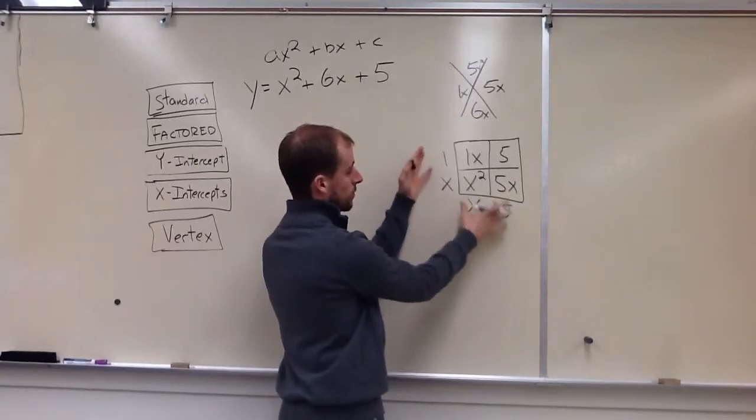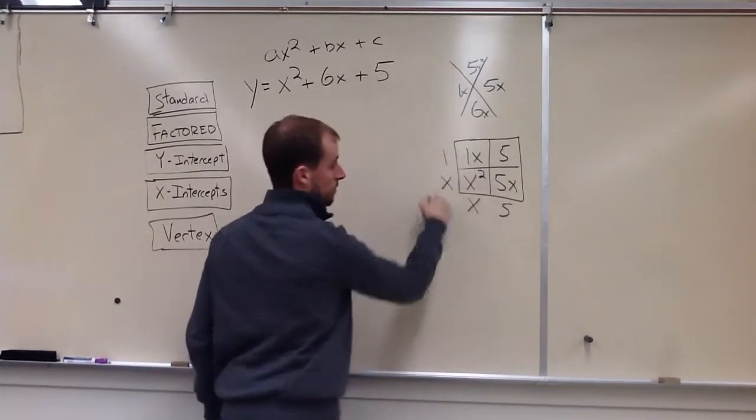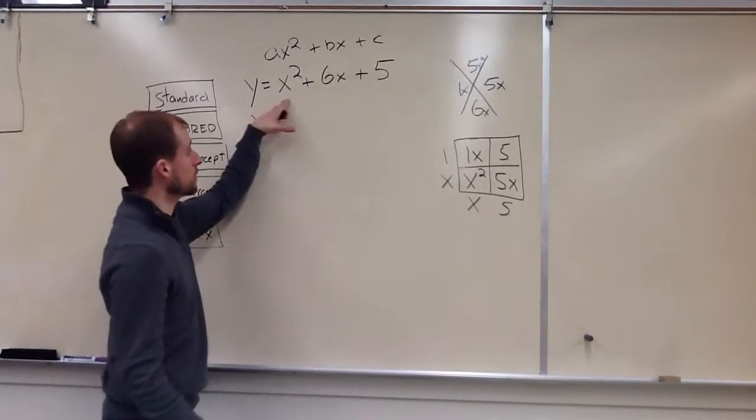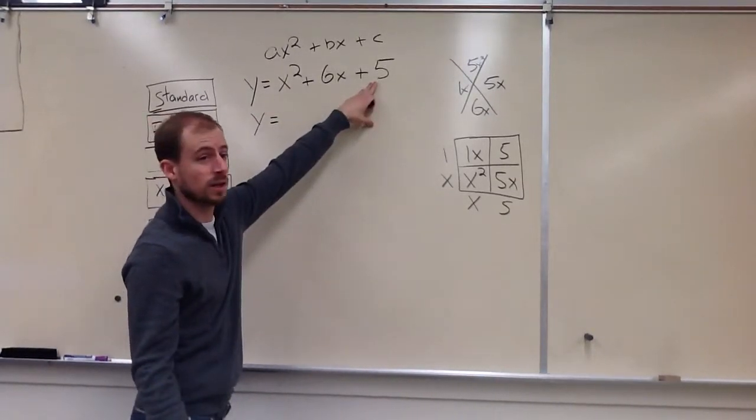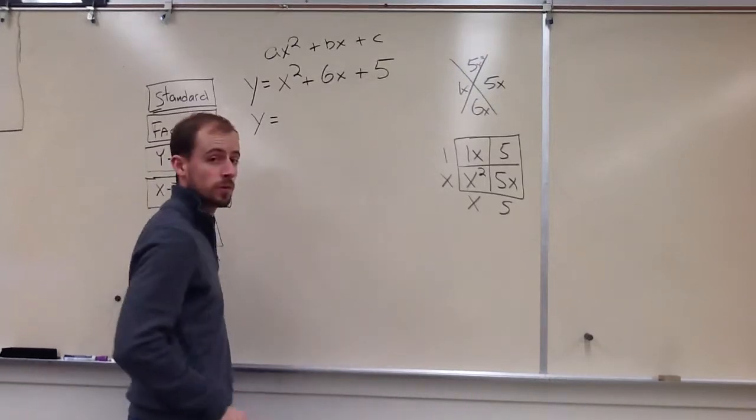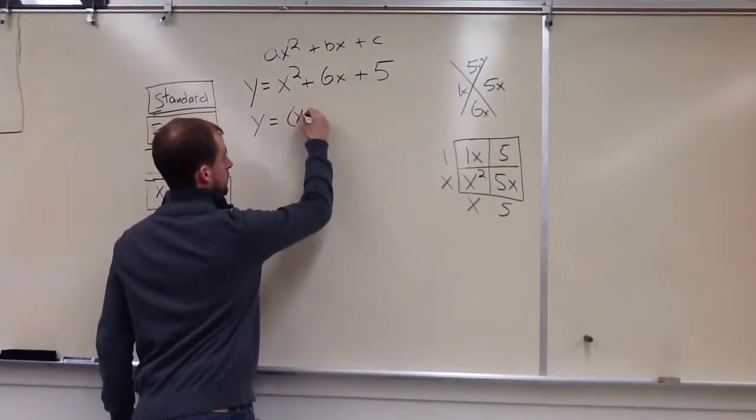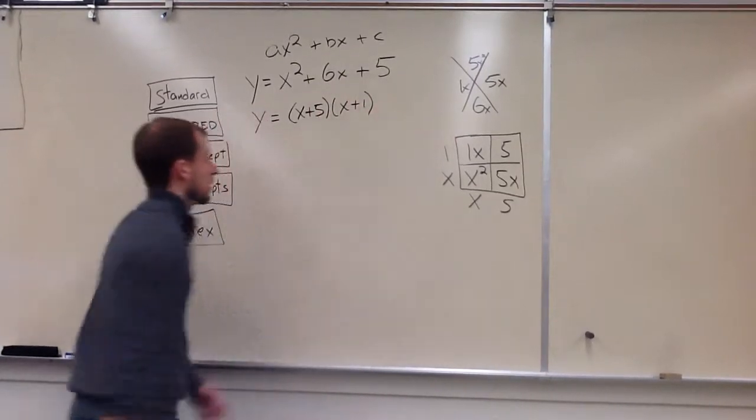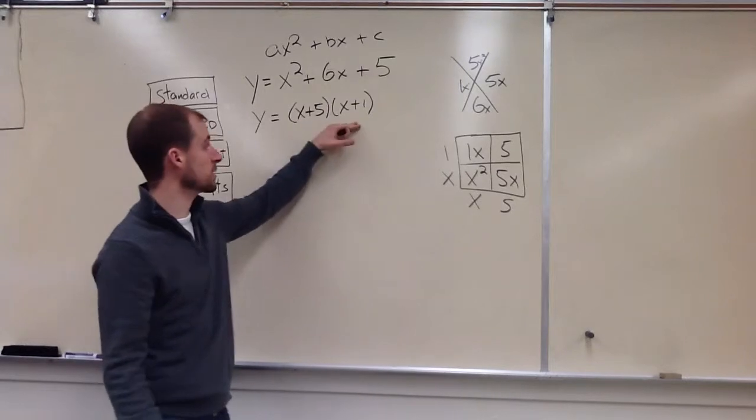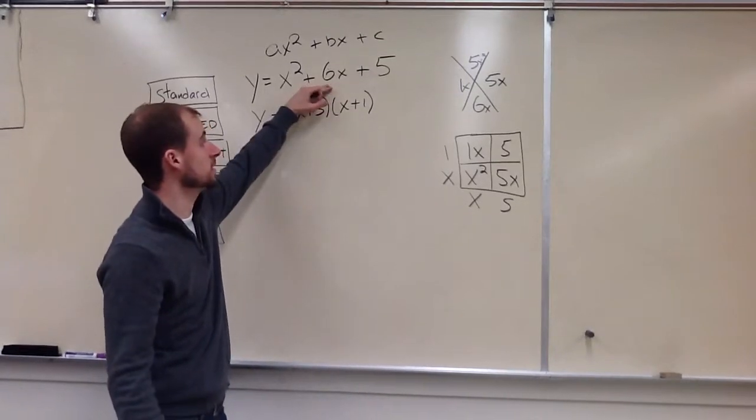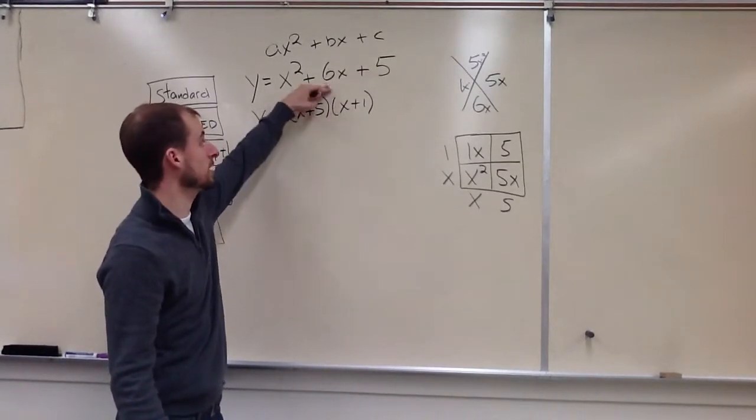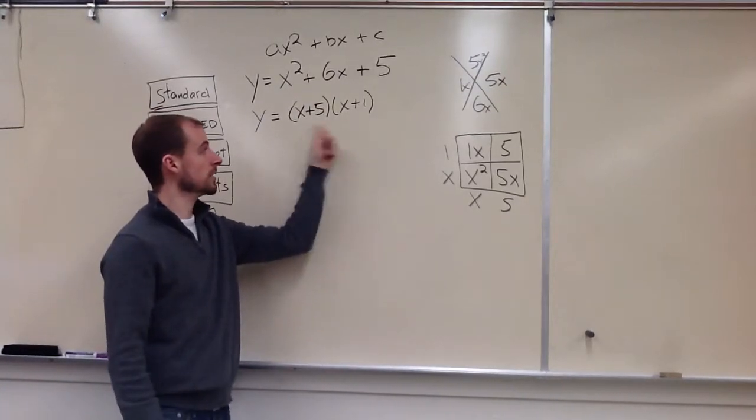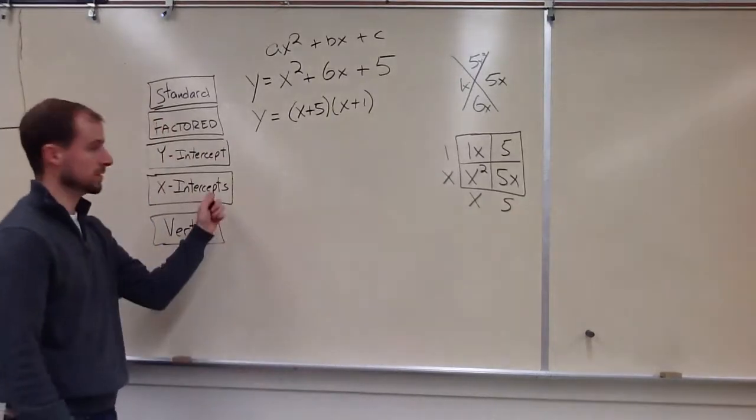Now we can write our factored form using this information. We're going to use this, the side, and the bottom. So we are simply rewriting this, and we're just writing it in a different form. It's actually useful for us later. That, right here, x plus 5 times x plus 1 is the same thing as this. If we multiplied it out, we'd get this back. And it's helpful for us, because we can use this factored form to find out our x-intercepts.